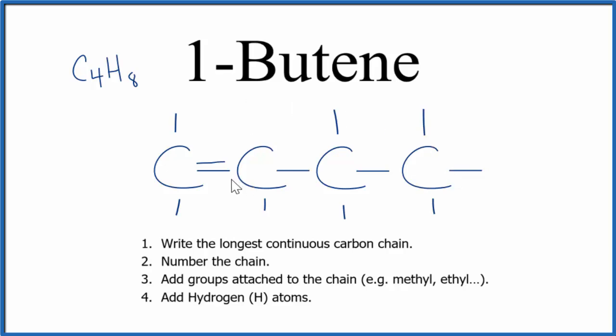This is the structural formula for 1-butene. We have four carbons — that's the 'bute' — and the ENE is the double bond, and it's on the first carbon.